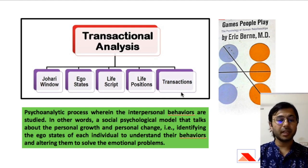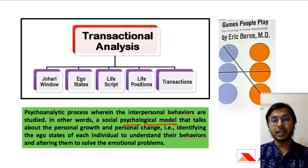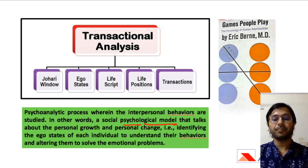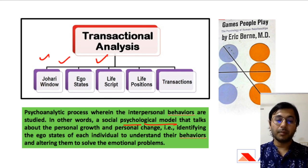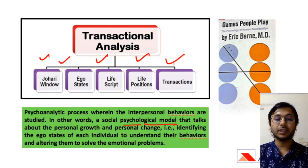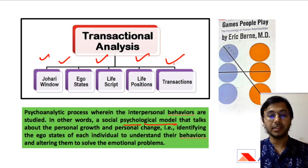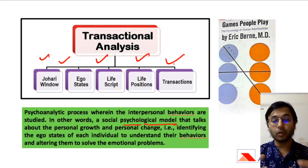The third is transactional analysis, which is a behavioral and social-psychological theory that aims to identify the ego states of individuals to understand their behavior. It tries to identify what kind of personality an individual has and predicts their behavior accordingly. Different approaches include the Johari window, ego states with adult, child, and parent categories, and life positions such as 'I'm okay, you are okay.' It was given by Eric Byrne, and the focus was on forecasting an individual's behavior based upon their personality traits.